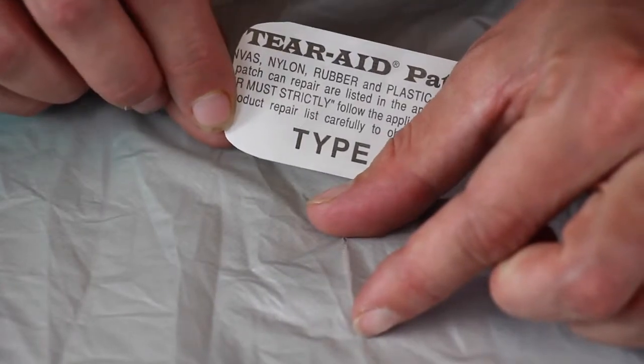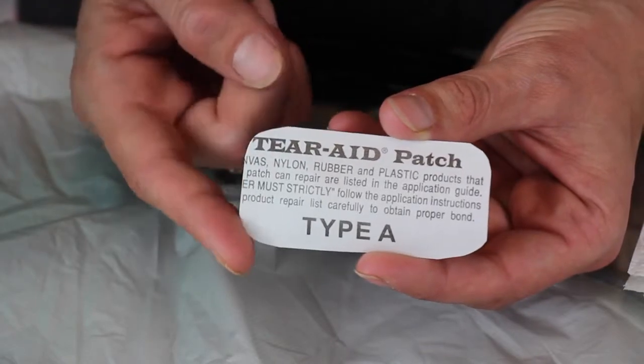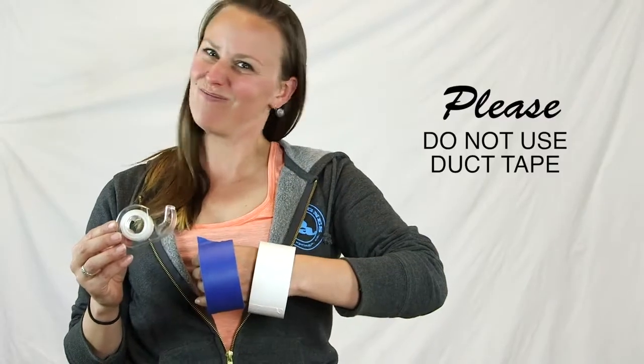Make sure the patch you are using is at least one inch larger than your tear on all sides and trim your patch to have rounded corners, if possible. Duct tape prohibits future repairs. Please do not use duct tape.